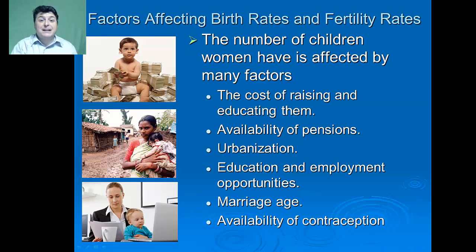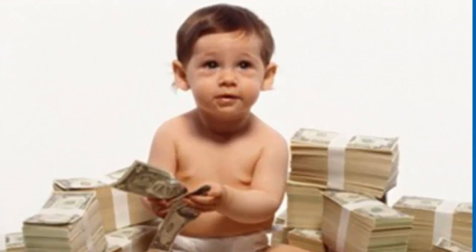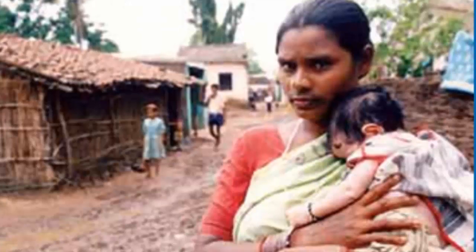The number of children a woman has is affected by many factors. One is the cost of raising and educating children — birth and fertility rates tend to be lower in developed countries where raising children is costly because they don't enter the labor force until their late teens or 20s. In the United States, it costs about $290,000 to raise a middle class child from birth to age 18. By contrast, many children in poor countries have to work to help their families survive. Another factor is the availability of pensions, which reduces a couple's need to have many children to support them in old age.